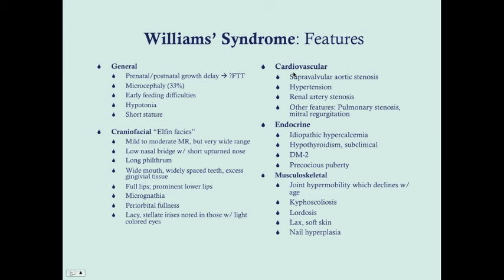Cardiovascularly, supravalvular aortic stenosis is a common and serious problem in Williams syndrome patients that needs to be addressed immediately. Hypertension is another risk, particularly because these patients have a tendency to develop renal artery stenosis. You want to check blood pressure in both arms because of possible aortic involvement, and any hypertension should be treated immediately. Other cardiovascular features include pulmonary stenosis and mitral regurgitation.